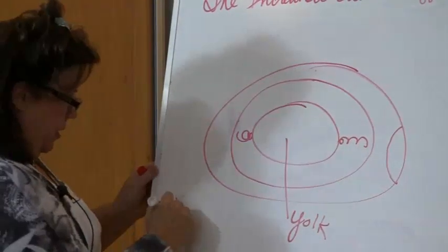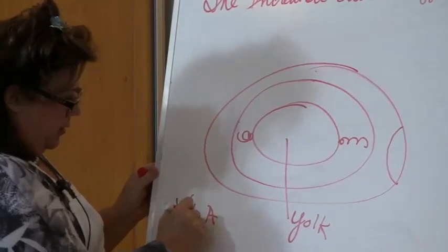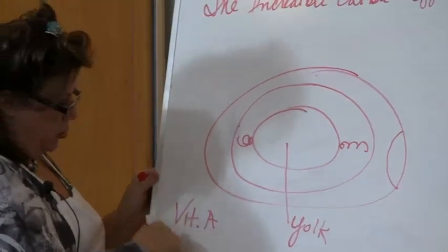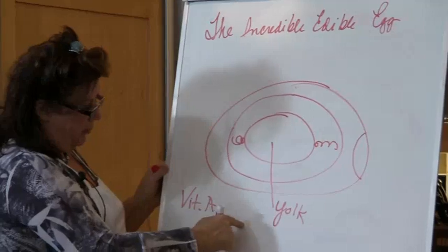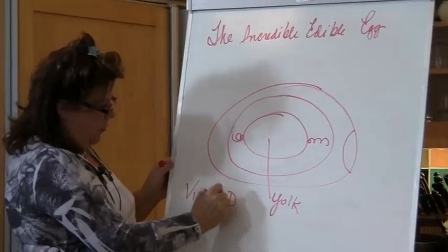So again, remember, properly produced egg, vitamin A. This is true vitamin A. True vitamin A only comes from animal fats, vitamin A and vitamin D.